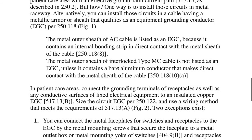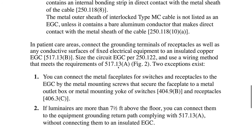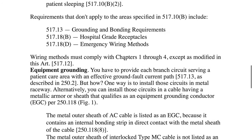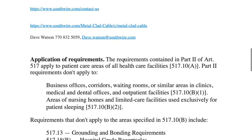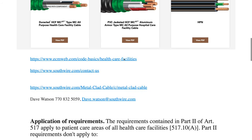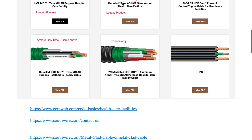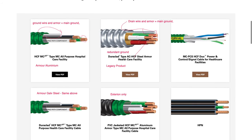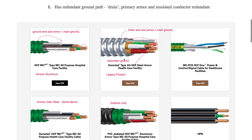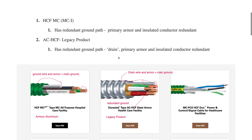Here are some other notes that I'll put in the notes for the video. Let's scroll up. Southwire has just updated their website, so this is what it looks like. They have two types. Traditionally, this wire was called AC HCFC cable.